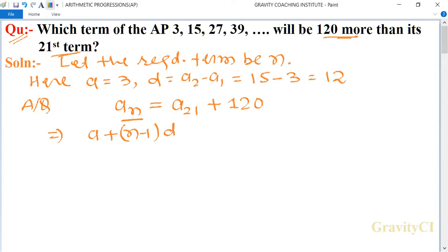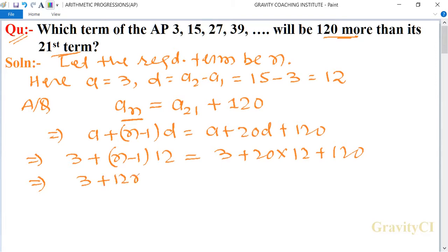So a plus (n-1)d is equal to a plus 20d plus 120. The value of a is 3 plus (n-1) into 12 is equal to 3 plus 20 into 12 plus 120. So 3 plus 12n minus 12 is equal to 3 plus 240 plus 120.